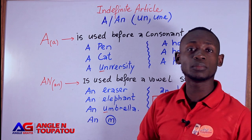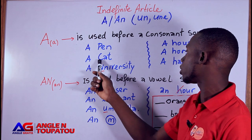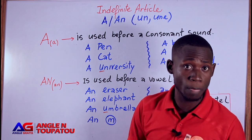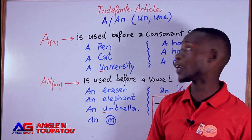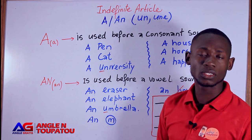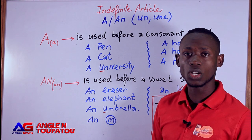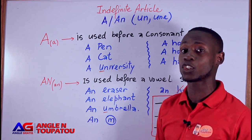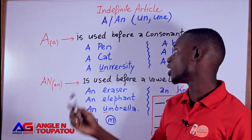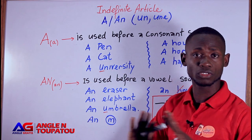It is the same for the letter C. We say 'a cat'. The letter C gives a consonant sound, so we say 'a cat'. That is why it's a consonant sound — because C gives a consonant sound. Very simple.